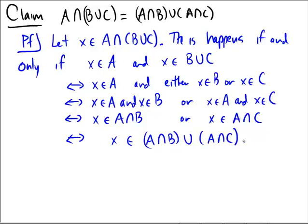And since we had if and only ifs throughout the entire argument, that means the steps are reversible. And so we've effectively done a double containment. We've gone forwards and backwards. This completes this set theoretic proof.